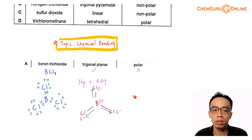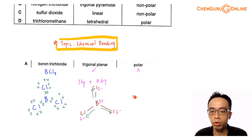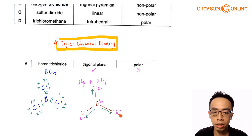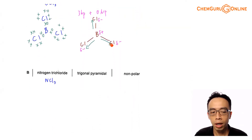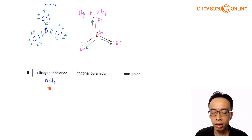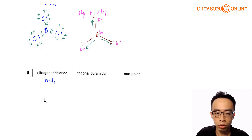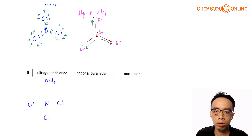Just by considering BCl₃, we can see that if we're not familiar with shapes of molecules and dipole moments, we have to work through all four options — A, B, C, and D — which can be quite tedious. Let us move on to Option B, which involves nitrogen trichloride, NCl₃. We again draw the dot-and-cross diagram, with nitrogen at the center and chlorine at the sides.